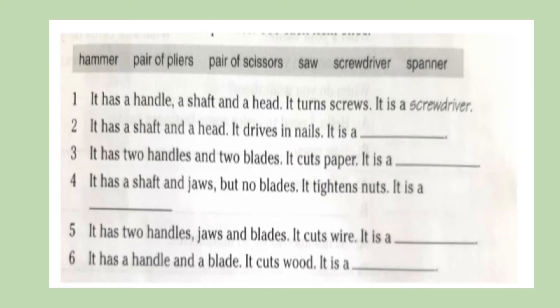Let's look at number one as an example. It has a handle, a shaft, and a head. So this is the description of the tool. Then we say it turns screws, so this is what we use it for. And this tool is a screwdriver.